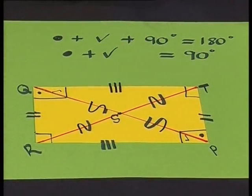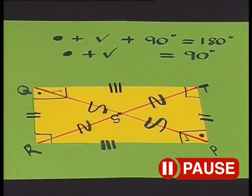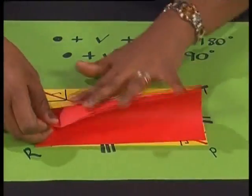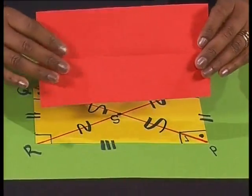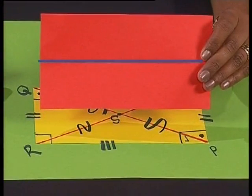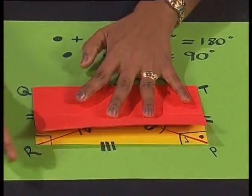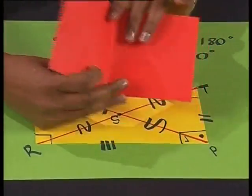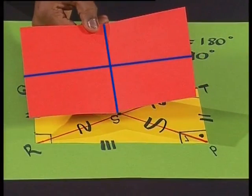Now let's take a careful look at the number of lines of symmetry the rectangle might have. Remember, to find a line of symmetry we look for a line over which, if we fold, the two sides fit perfectly onto one another. I have a paper cut-out of the rectangle to make folding easier — look first and predict how many lines of symmetry you expect. We see this fold gives a line of symmetry. Let's try folding QR onto PT — that is also a line of symmetry. So the rectangle has two lines of symmetry.